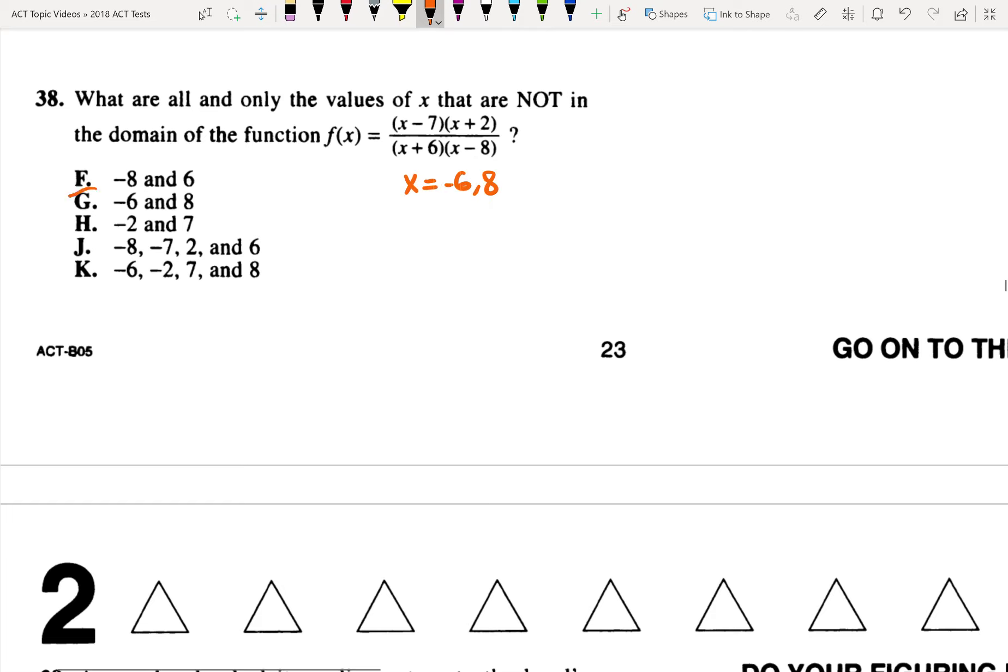These would be our restrictions, so the answer would just be G. But I do want to point out you do the restrictions even before you cancel anything out. So let's say we had x minus eight on top here, right? Well then these would cancel out and you just get left with x minus seven over x plus six.